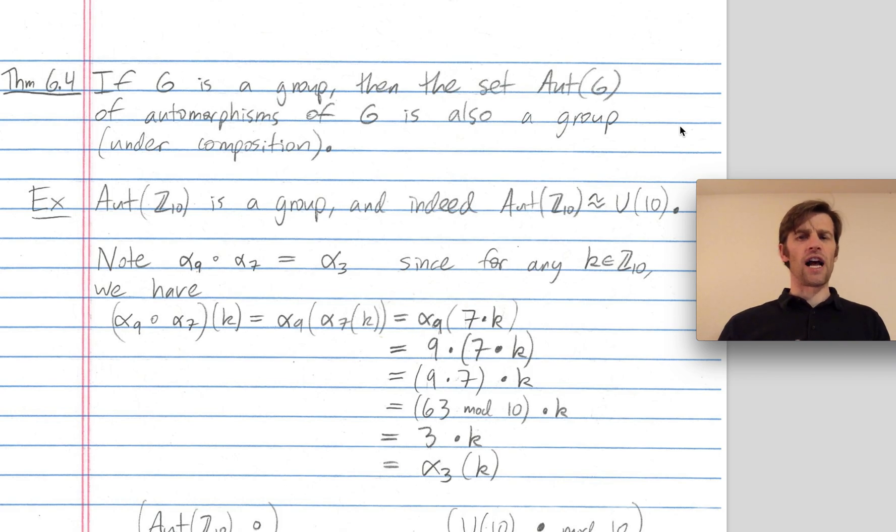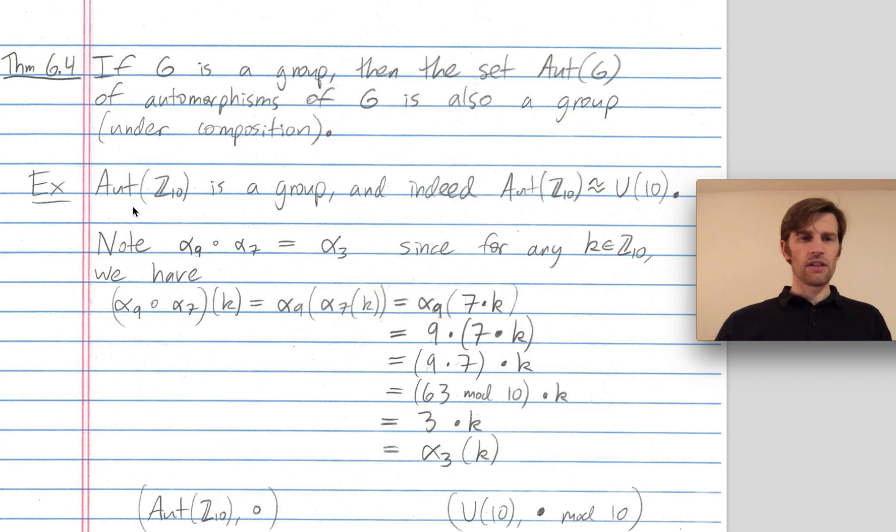I don't think this theorem will play a huge role in our class, but it's good to be aware of. It's an important theorem for later in algebra. When you look at the group of automorphisms, it's definitely different than the original group you started with. We started in our example with G being Z mod 10, which has 10 elements. The automorphisms of Z_10, remember there's only four. Have we seen this group with four elements before? Yeah.